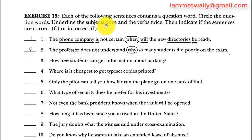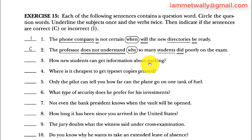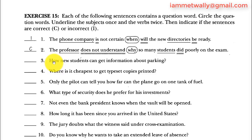Exercise 15: each of the following sentences contains a question word. Circle the question word, underline the subjects once and the verbs twice, then indicate if the sentences are correct or incorrect. Sentence 3: 'How new students can get information about parking.' There is a question word 'how.' 'New students' is the subject and 'can get' is the verb. Since 'can' is an auxiliary verb, it should come after 'how', so the sentence is incorrect.